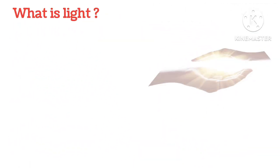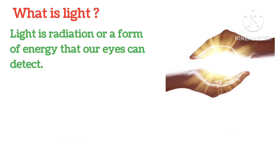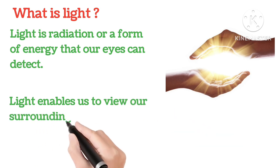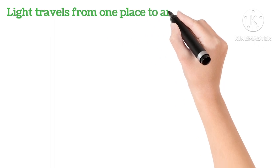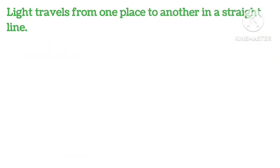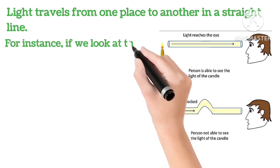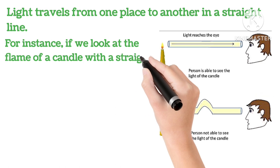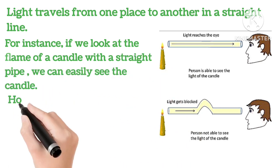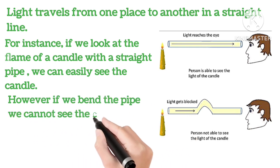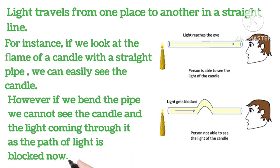What is light? Light is a radiation or the form of energy that our eyes can detect. Light enables us to view our surroundings. Light travels from one place to another in a straight line. For example, if we look at the flame of a candle with a straight pipe, we can easily see the candle as shown in the picture. However, if we bend the pipe, we cannot see the candle and the light coming through it, as the path of the light is blocked now.